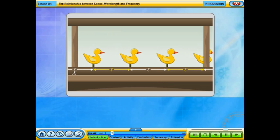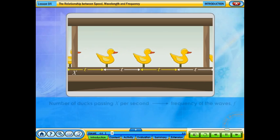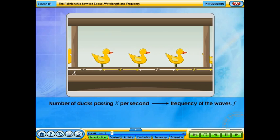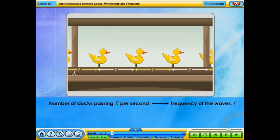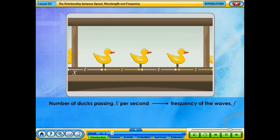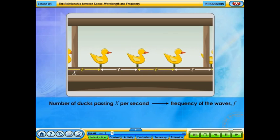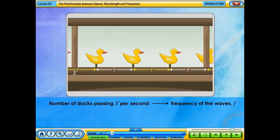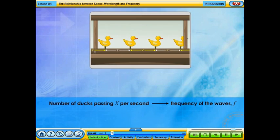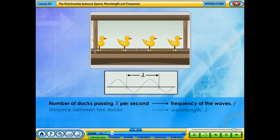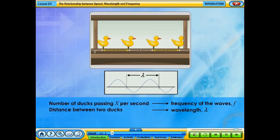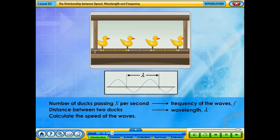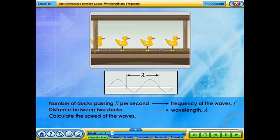If the ducks represent the waves, the number of ducks passing through X every second represents the frequency of the waves. If the distance between two ducks, L, represents the wavelength of the waves, then can you calculate the speed of the waves?